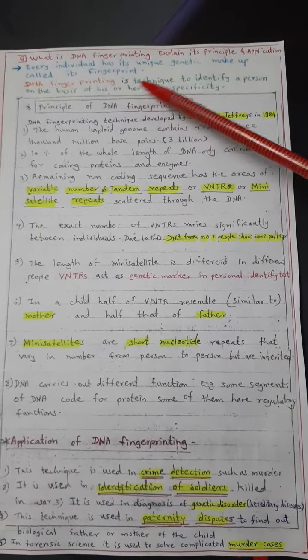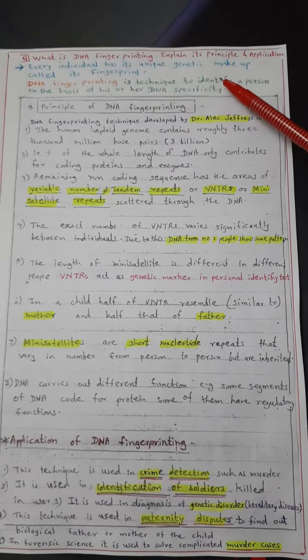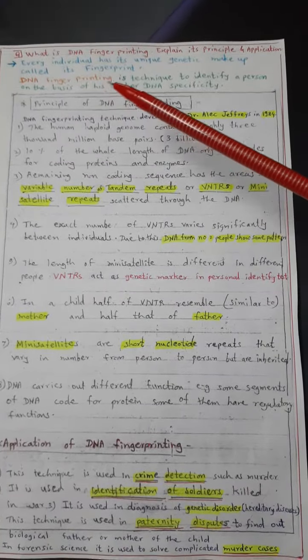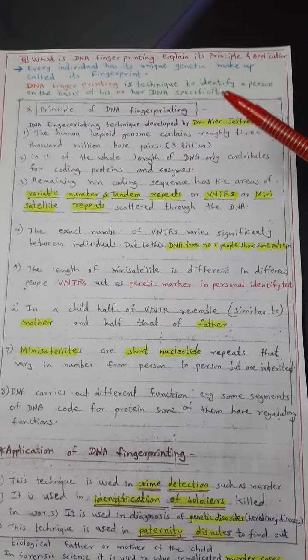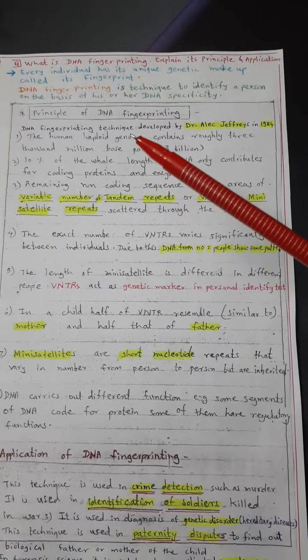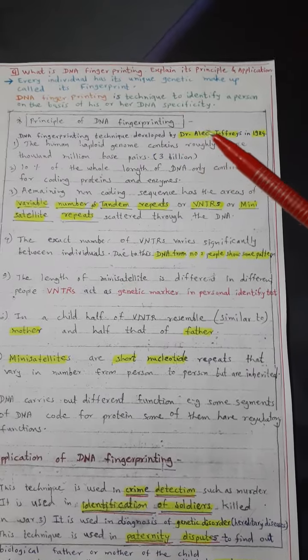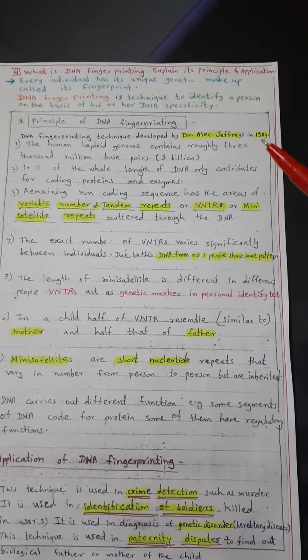DNA fingerprinting is the technique to identify a person on the basis of his or her DNA specificity. This technique was developed by Dr. Alec Jeffrey in 1984.